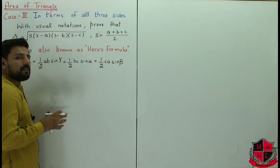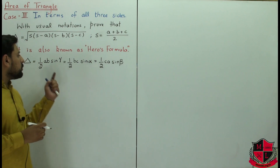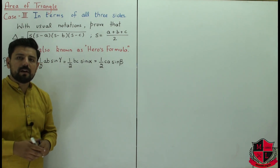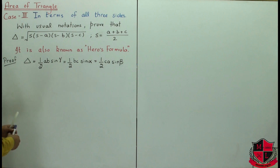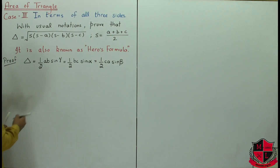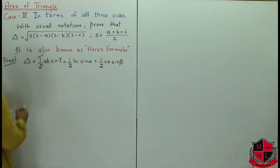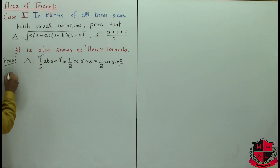I can prove Hero's formula using any of these forms. Let's use the first one: area equals one-half ab sine of gamma.